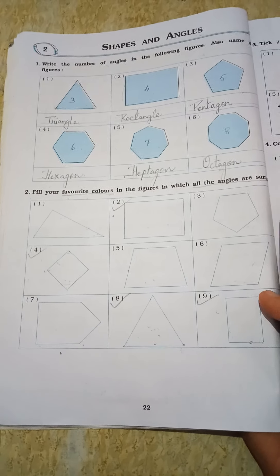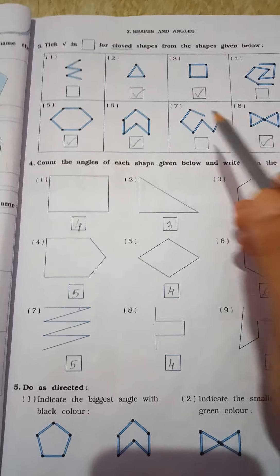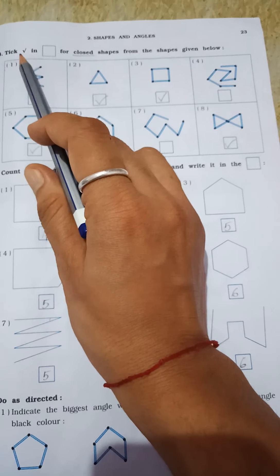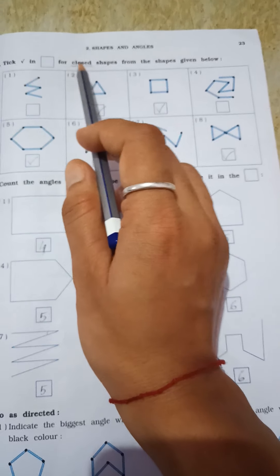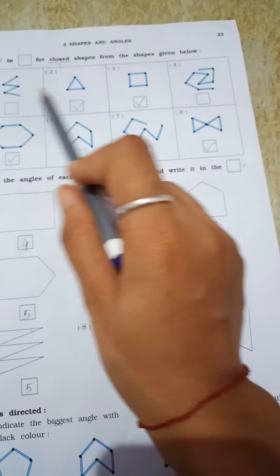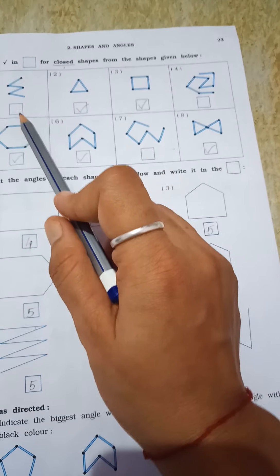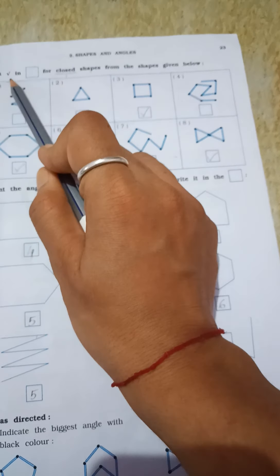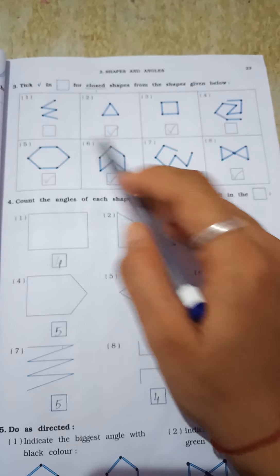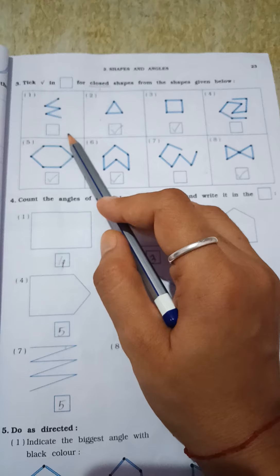Okay, now come on page number 23. See, question number 3. Tick in box for the closed shapes, for the shapes given below. These are some shapes you can see here, but only we have to put the tick when we got the close. Close means bandh. Bandh shape na figure ma apre tick karwaano chai.